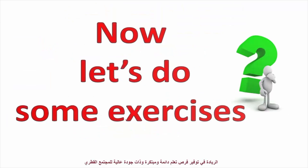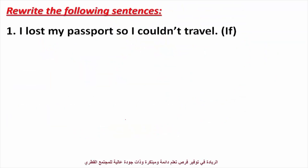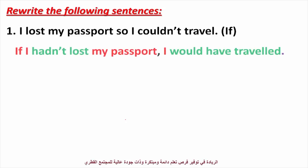Rewrite the following sentence using 'if': 'I lost my passport so I couldn't travel.' The answer is: 'If I hadn't lost my passport, I would have traveled.' This is type three — past perfect in the if clause and would have plus past participle in the main clause.